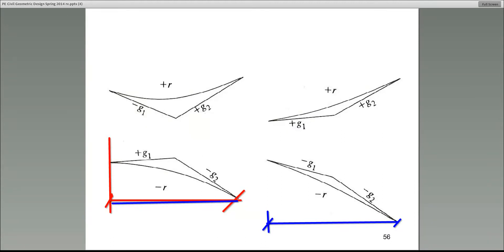One other thing is the gradient, the gradient of these tangent lines. The back tangent, for example, here has a gradient or you can think of it as a slope. So the back tangent has what they call G1. That's the slope of the back tangent. G2 is the slope or the gradient of the forward tangent. G1 and G2, either one could be positive or negative.